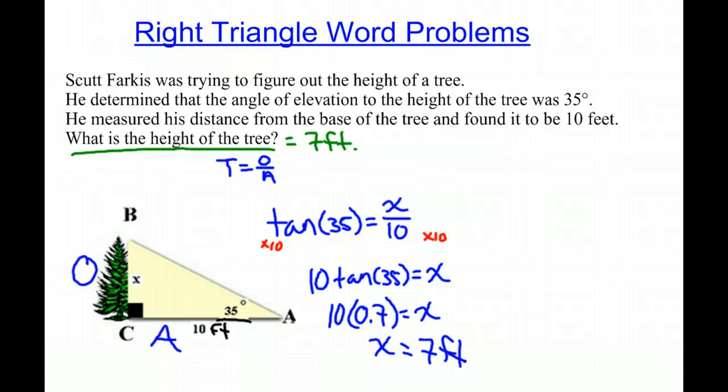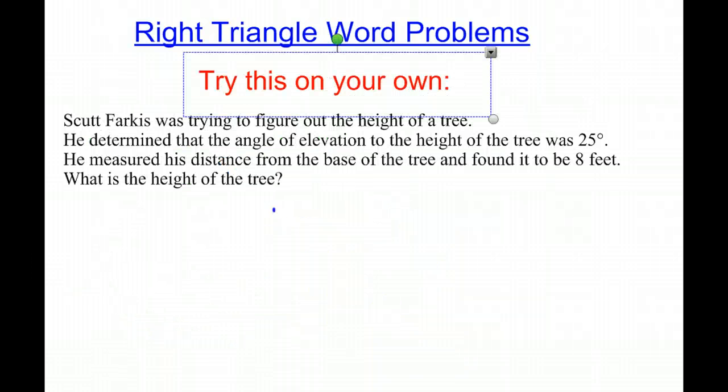Now I'd like you to try one on your own. So please try this problem here. Scott Farkas was trying to figure out the height of a tree. He determined that the angle of elevation to the height of the tree was 25 degrees. He measured his distance from the base of the tree and found it to be 8 feet. What is the height of the tree? So first, you're going to want to draw your diagram, labeling the correct points, and then find the height of the tree.